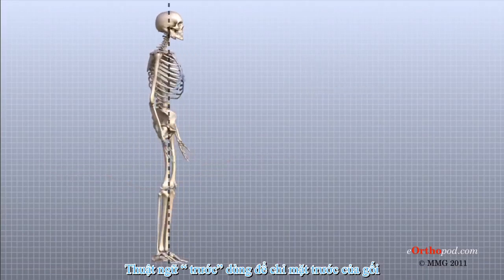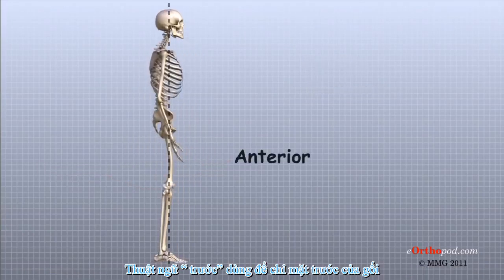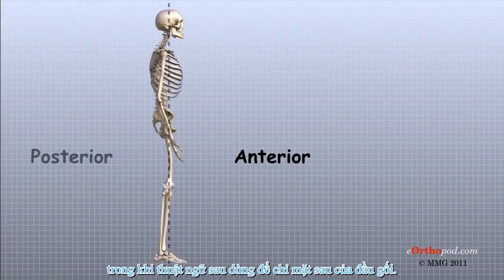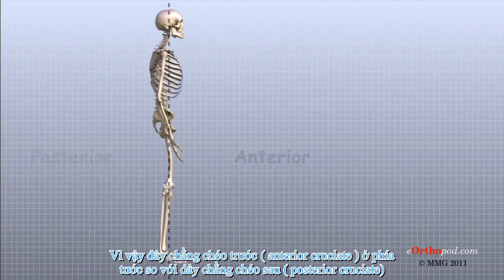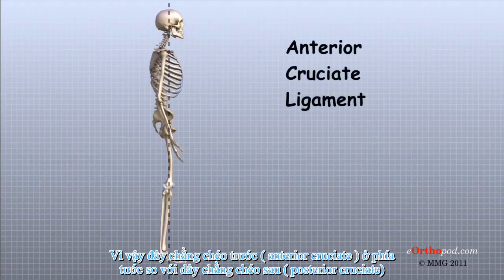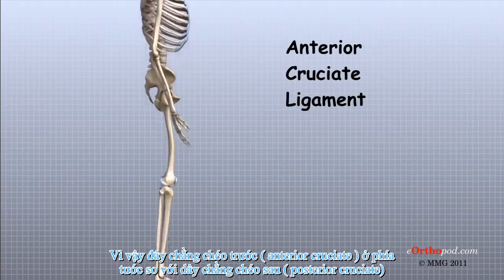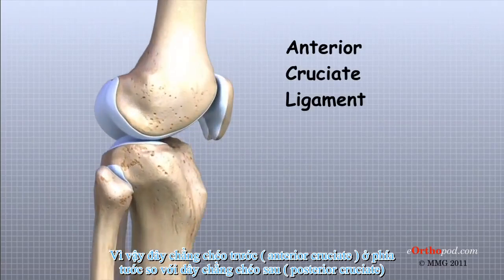The lateral side of the knee is the side that is away from the other knee. The term anterior refers to the front of the knee, while the term posterior refers to the back of the knee, so the anterior cruciate ligament is in front of the posterior cruciate ligament.